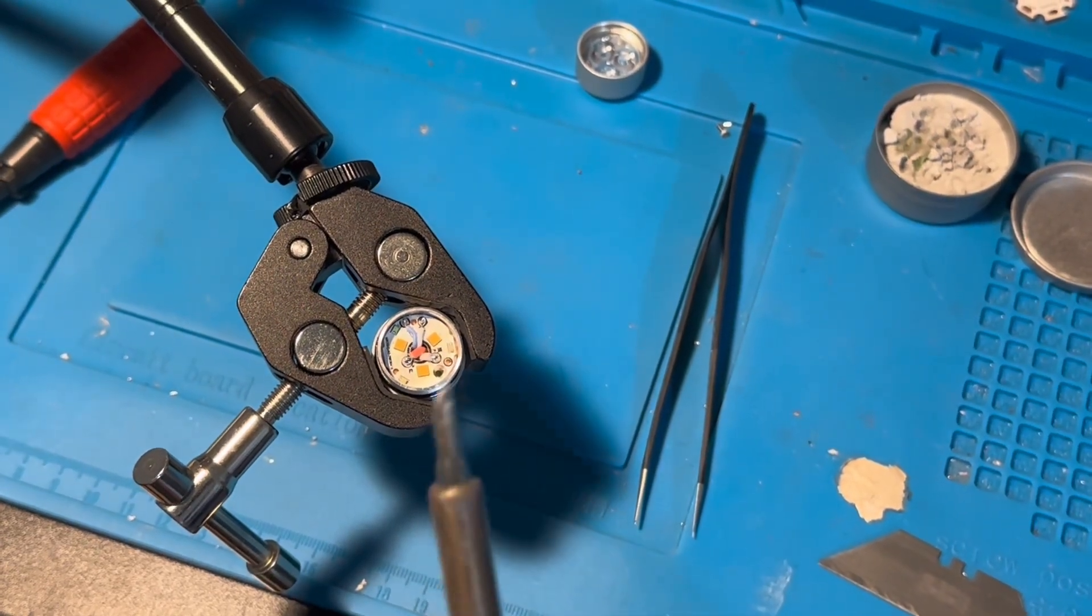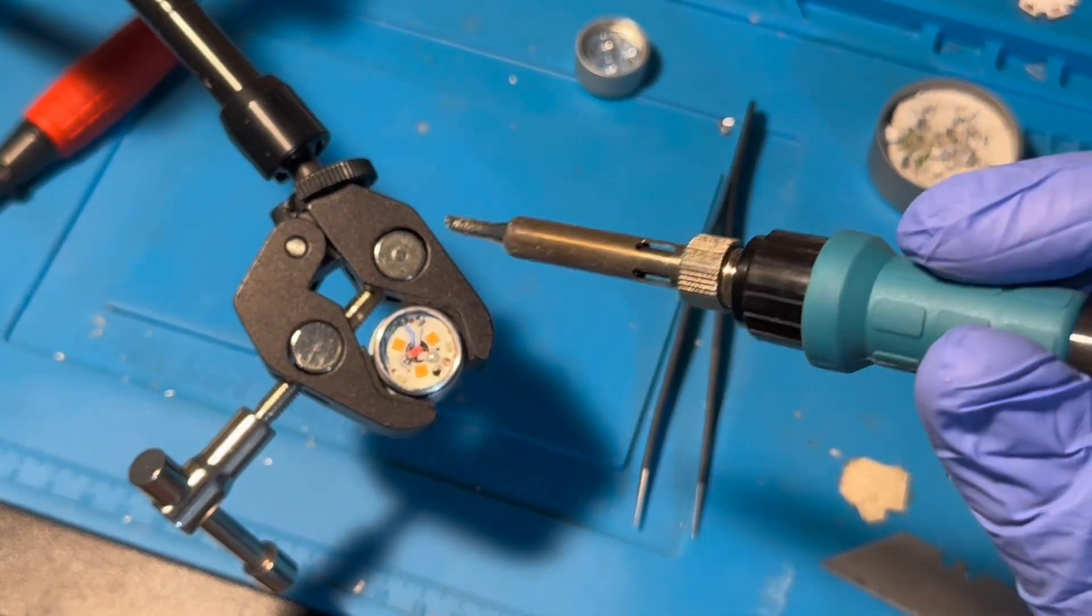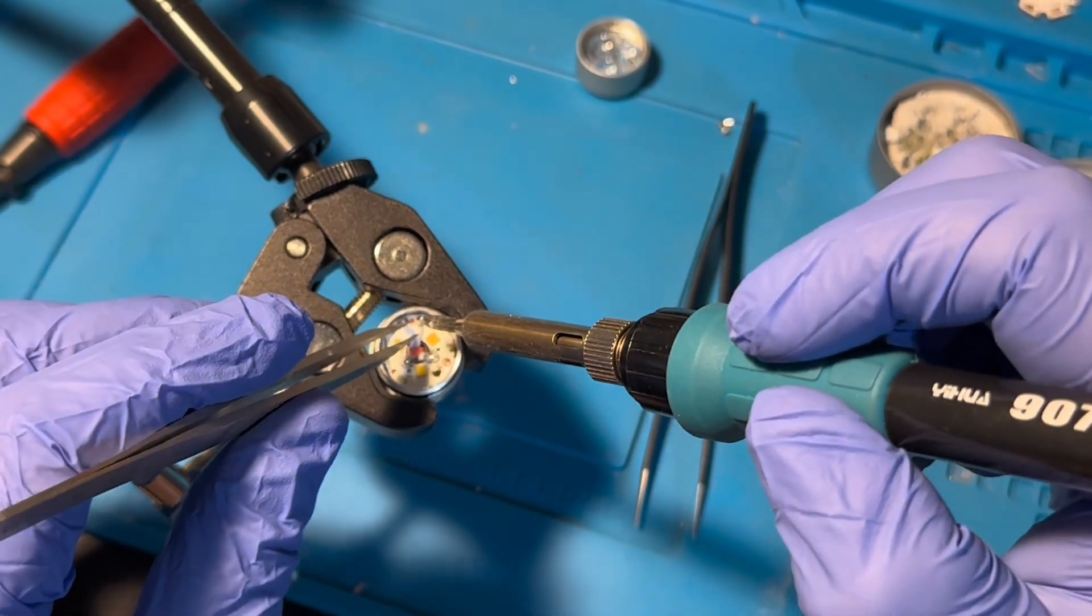Hey guys, so this is my TS-10 that I'm going to mod with RGB lights. This is my first attempt.